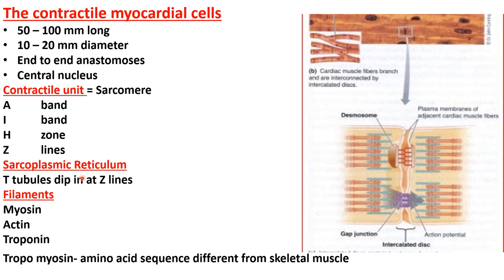The filaments present in the cardiac contractile cells are myosin filament, actin filament, troponin filament, and tropomyosin filament. The amino acid sequence is different from the skeletal muscle in tropomyosin, but the other three filaments are quite similar to those of skeletal muscle.